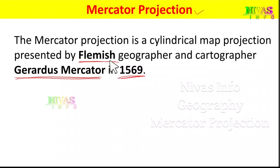What is Mercator Projection? It is a cylindrical map projection. On the globe there is a North Pole and a South Pole. There is space at the poles and in the middle, with equidistant spaces along the equator. Points are arranged differently across the globe.